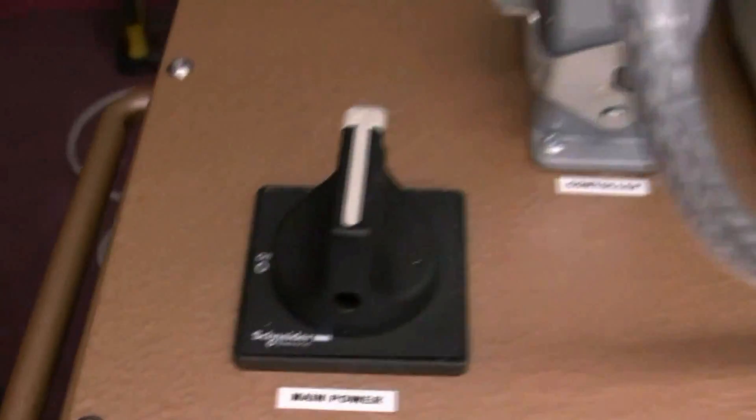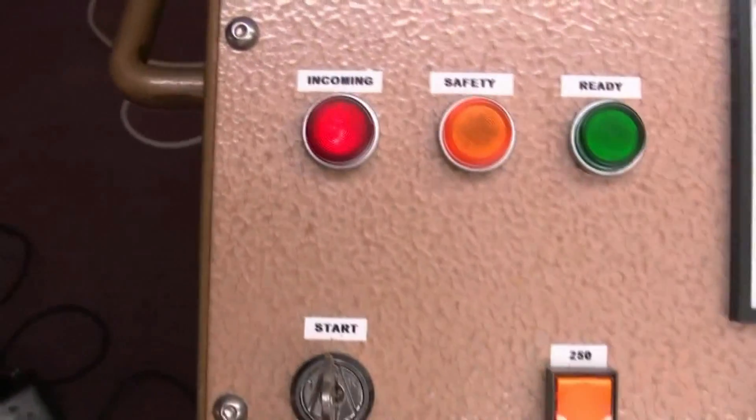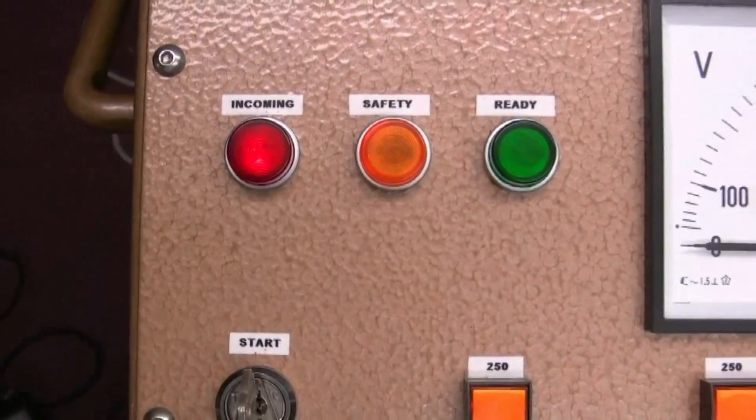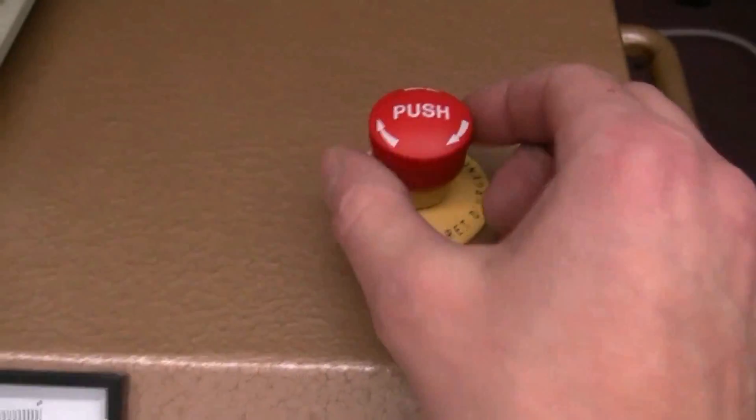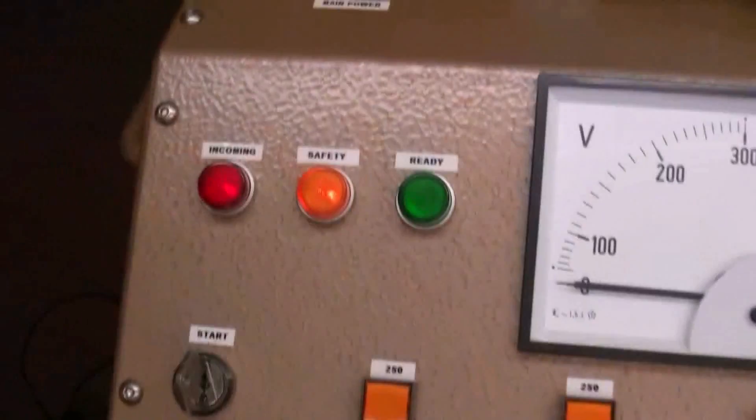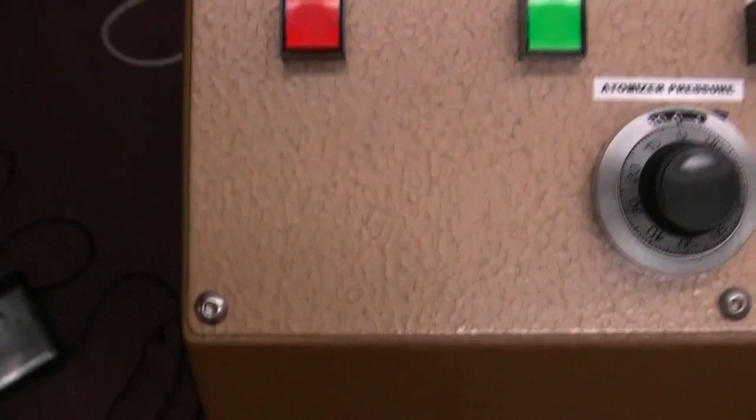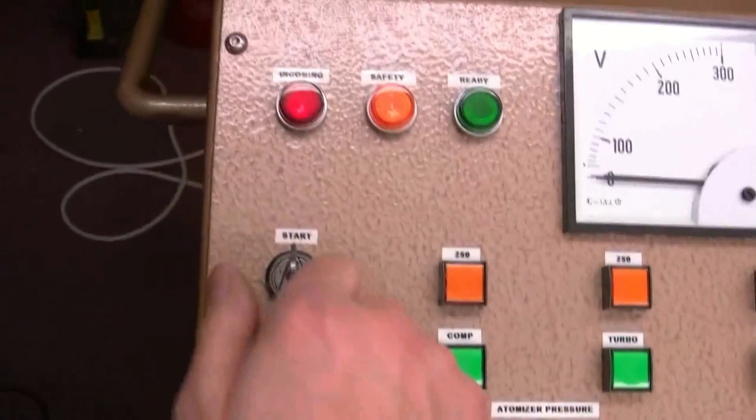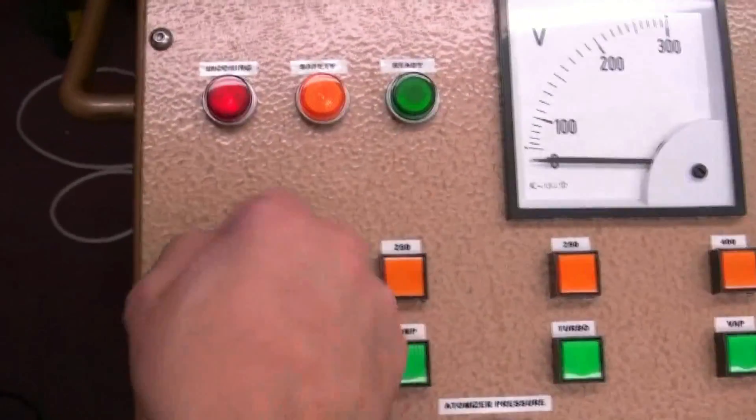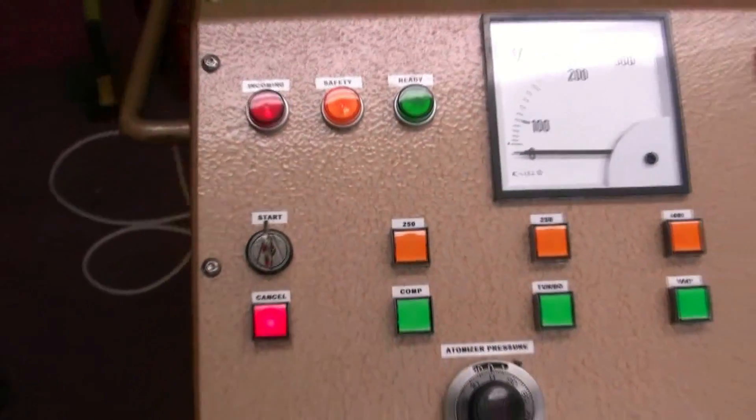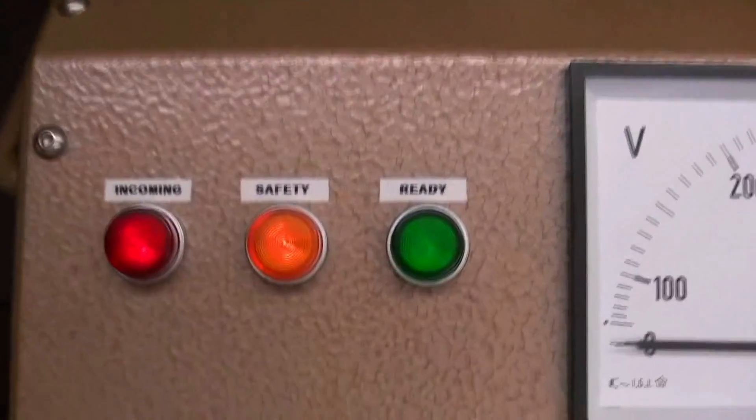We're going to power it up so you can see it all working. There's our main switch. You might just make that light out there, the incoming mains is present, but the stop button is now released so we've got two lights on. Now we've got a little key switch, turn the old key and we're ready.